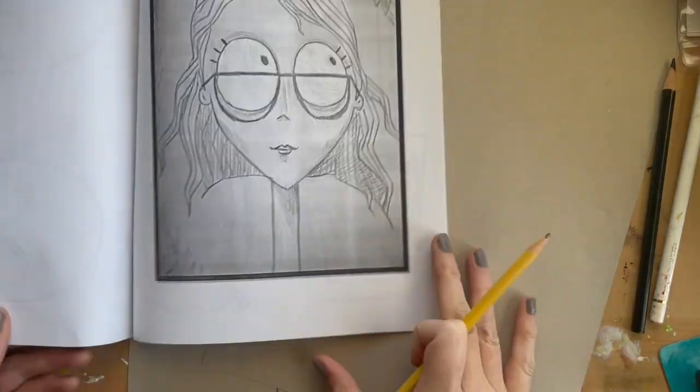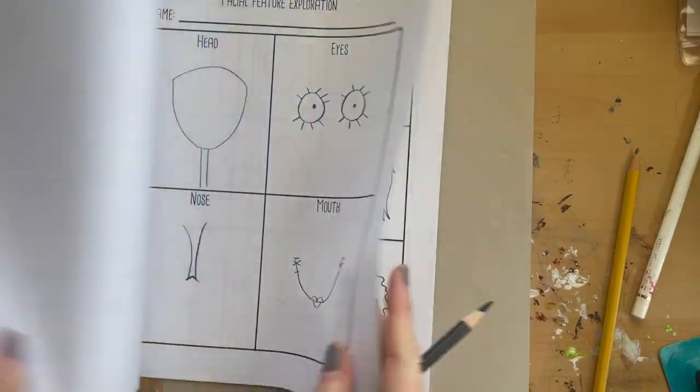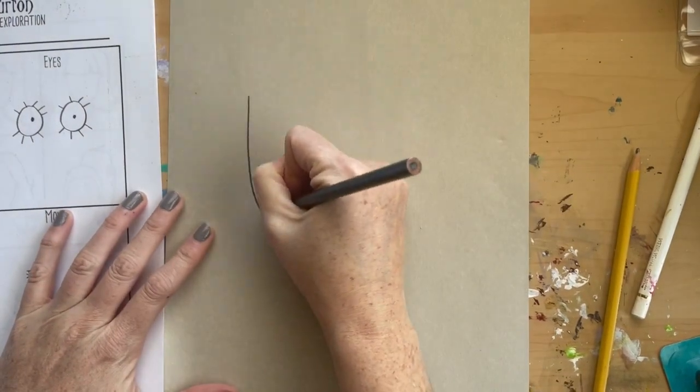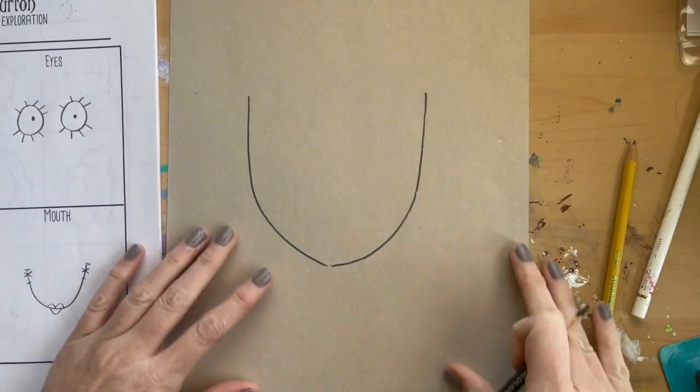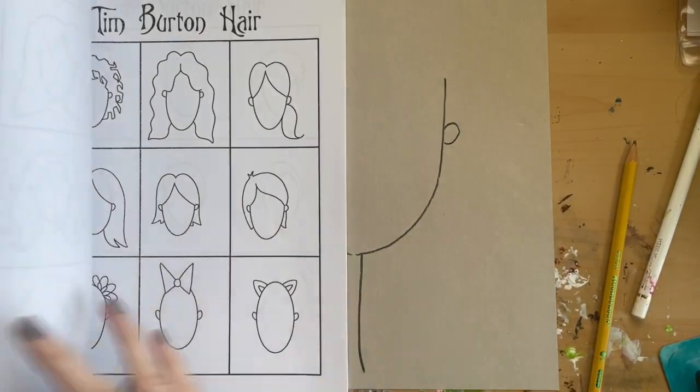Now we're to the part where we're going to practice putting it all together. Take a piece of paper. In this video, you see gray. We'll use gray paper for the final example. But in class today, I want you to take a blank sheet of paper and practice doing this larger.